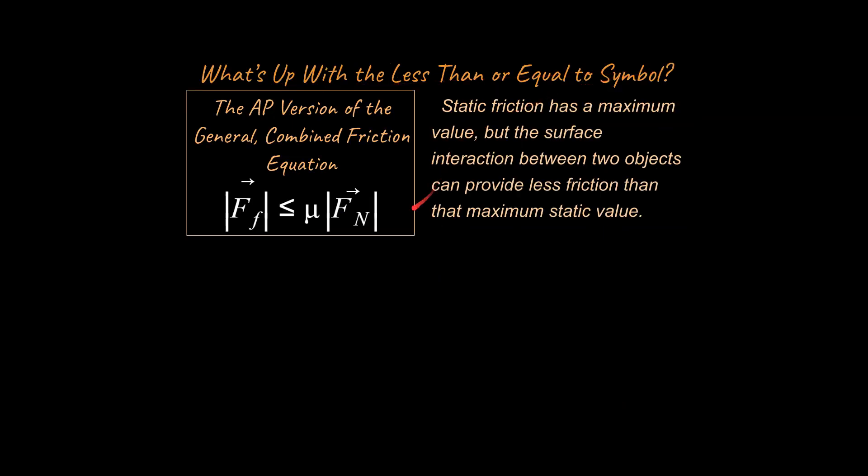All right. And lastly, I need to talk about what's up with this less than or equal to symbol. So this is the AP version of the equation. So static friction has a maximum value, but the surface interaction between two objects can provide less friction than that maximum static value.